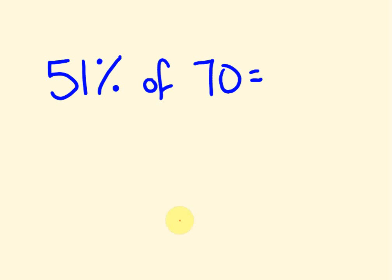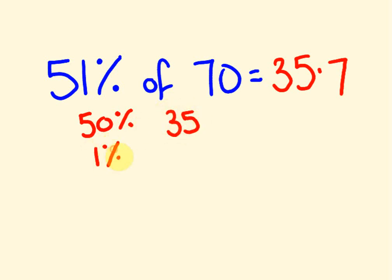Hopefully you've paused it, hopefully you've worked it out. So hopefully you also got the answer of 35.7. Let's work out how we got this answer. We have a 50% part, which is a halfway, which is 35, and a 1% part, which we move the decimal place back 1, 2 times, so 0.7. We add these together, we get 35.7. I reckon you could do that in your head.